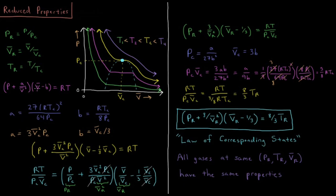We're going to define some new quantities called the reduced pressure, reduced molar volume, and reduced temperature. The reduced quantity equals the standard quantity divided by the critical quantity: reduced pressure equals pressure divided by critical pressure, reduced molar volume equals molar volume divided by critical molar volume, and reduced temperature equals temperature divided by critical temperature.